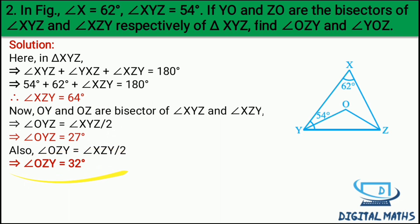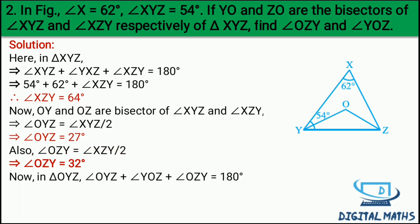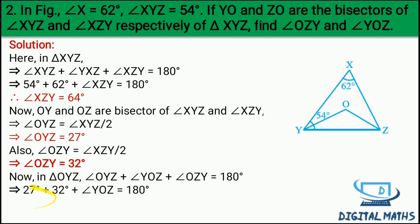Ab in triangle OYZ: angle OYZ + angle YOZ + angle OZY = 180 degree. So angle YOZ = 180 minus 32 minus 27. Nahi samajh mein aaya to rewind karo, wapas dekho - bhoat acha lagega, bhoat samajh mein aayega. Phir bhi doubt rahe to comment mein post karo, hum log available hain.